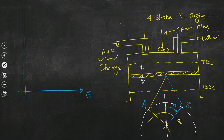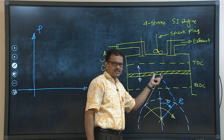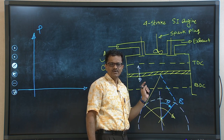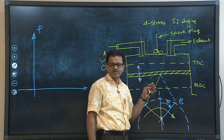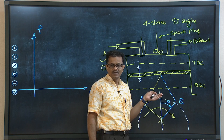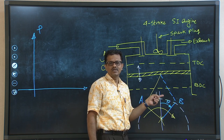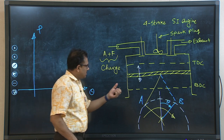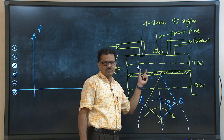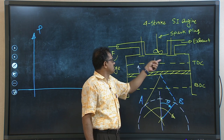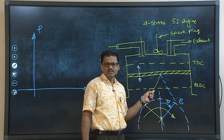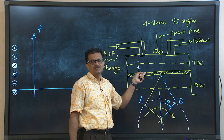In the P-theta plane, with theta on the x-axis and pressure on the y-axis, we map the rise in pressure vis-à-vis the angular displacement of the crank. This gives information about the rise in pressure during the combustion process, which is very important to the designer. During the intake stroke, the exhaust valve remains closed, the intake valve is open, and the piston traverses from TDC to BDC, drawing in the air-fuel mixture.